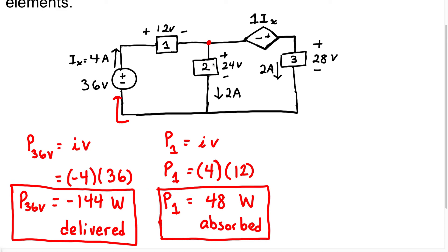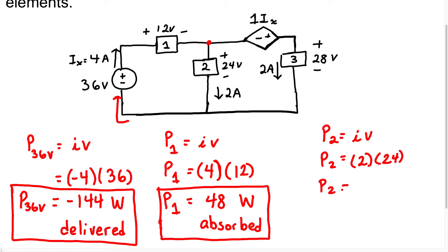For box 2, the power equals current times voltage. The current in this element is 2 amps, and it flows from the positive terminal to the negative terminal. Therefore, we have a positive current and the voltage is 24 volts. When we solve for this, the power equals 48 watts, and this element is absorbing power.